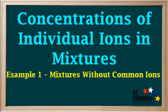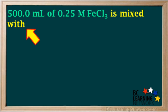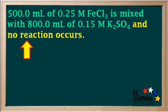In this example, you'll be shown how to find the final concentrations of individual ions when two non-reacting solutions are mixed. 500 milliliters of 0.25 molar FeCl3 is mixed with 800 milliliters of 0.15 molar K2SO4, and no reaction occurs.